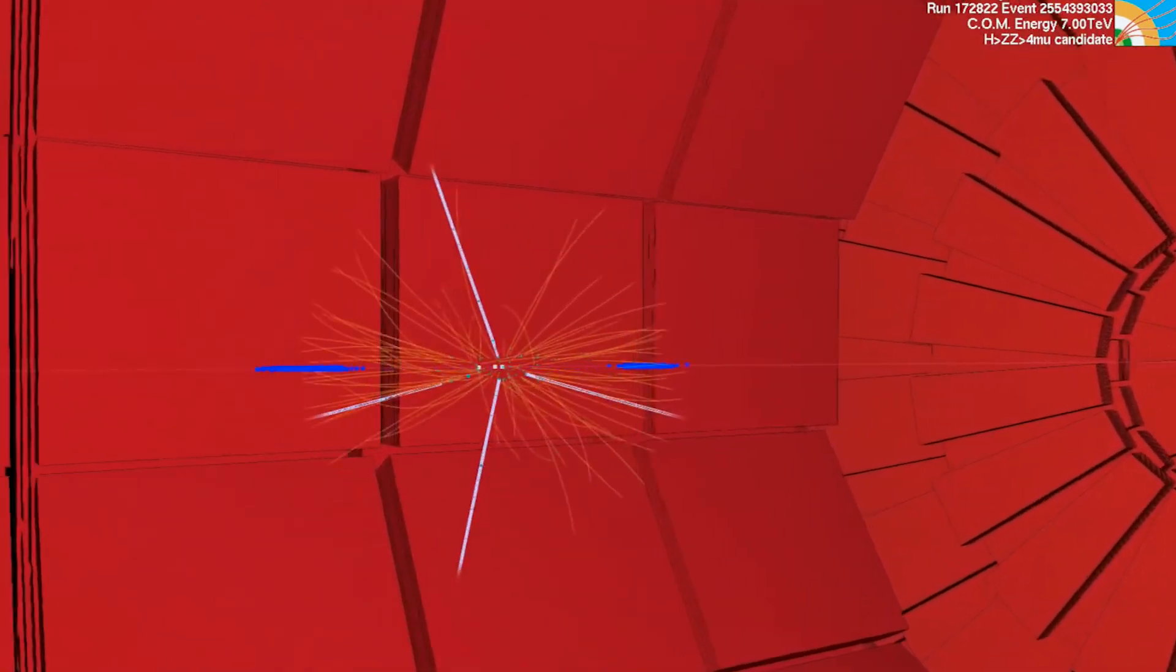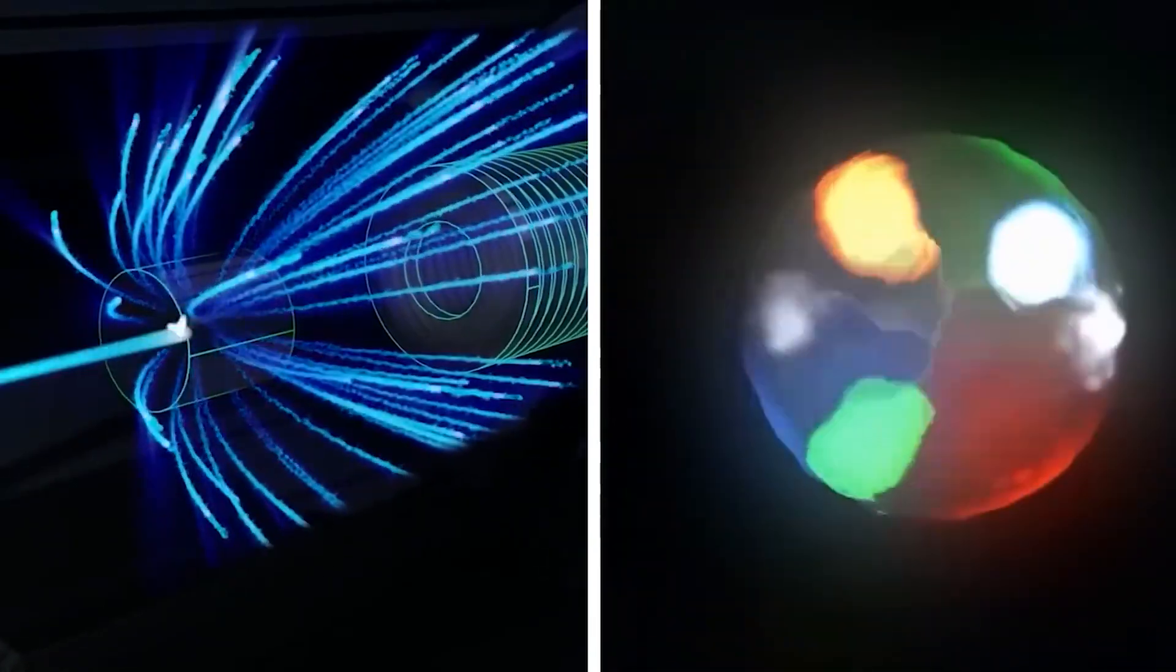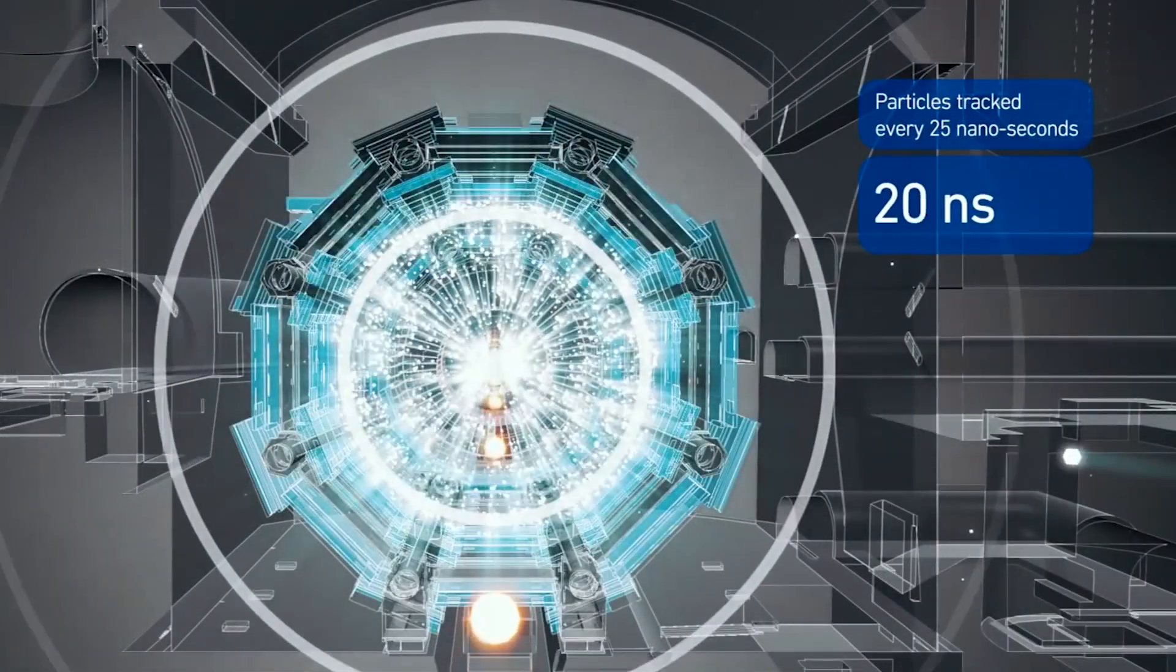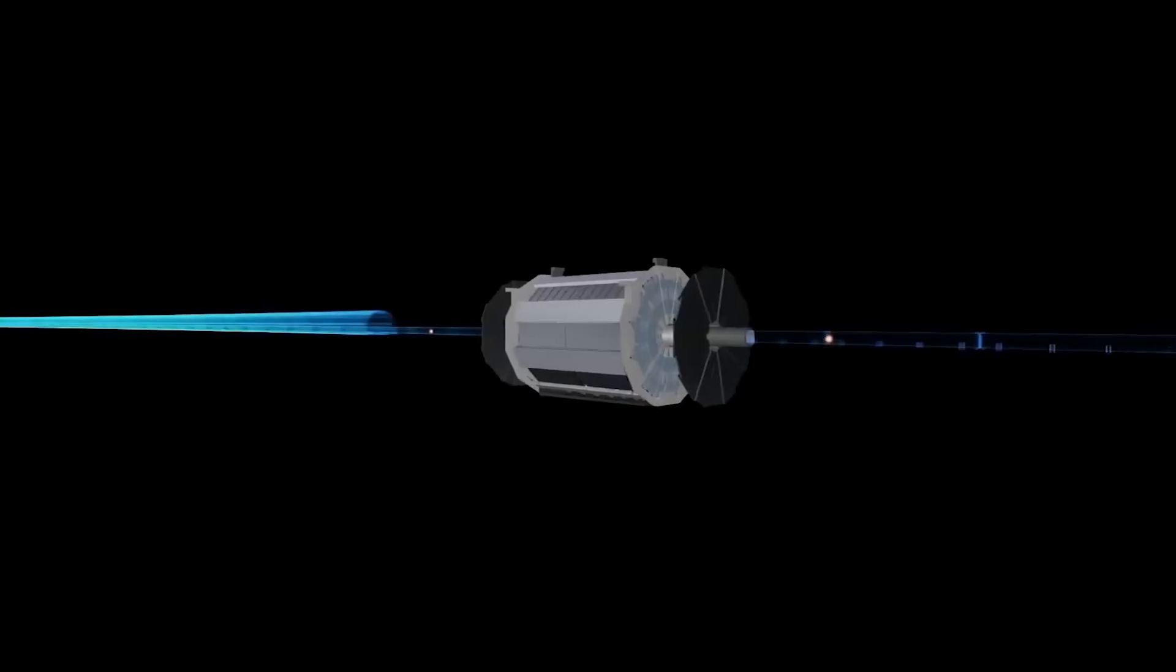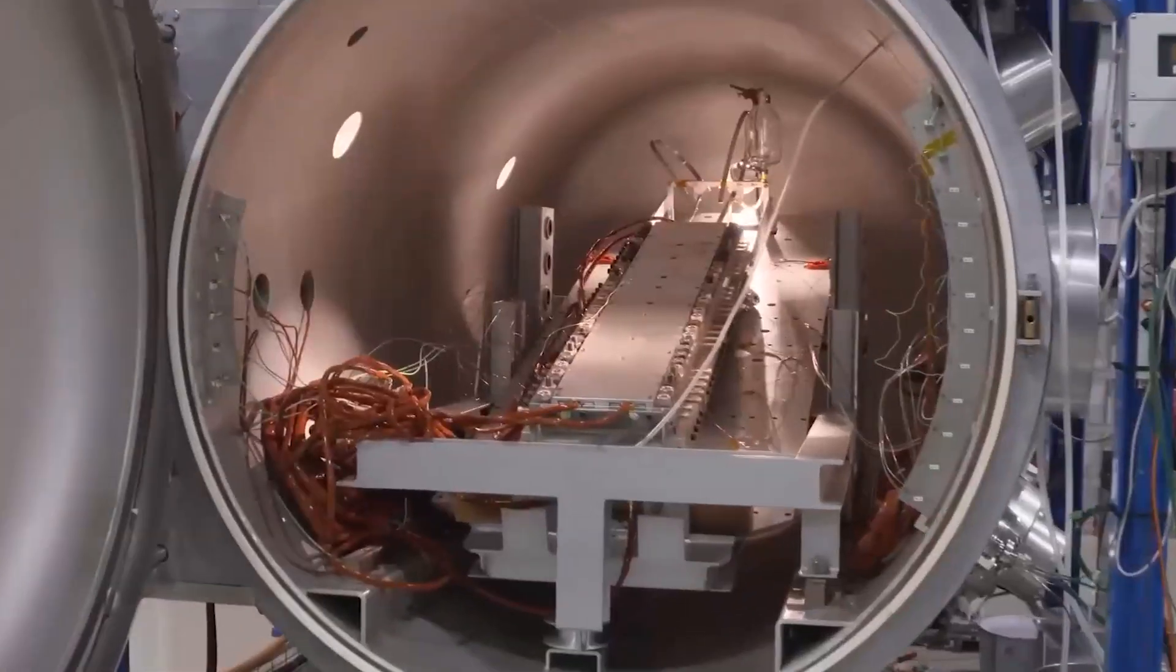According to the theory of the Higgs mechanism, the whole space is filled with a Higgs field, and by interacting with this field, particles acquire their masses. Particles that interact intensely with the Higgs field are heavy, while those that have feeble interactions are light. The Higgs field has at least one new particle associated with it, the Higgs boson.